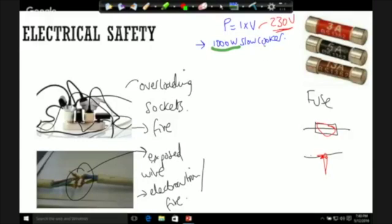So what we do if we're asked what fuse is best for a 1000 watt slow cooker, we would have to rearrange this equation. This is the one that you might be asked to do for foundation as well - rearranging this equation. You don't get asked to rearrange many, but this would be one. So P equals I times V, we'd need to rearrange it to work out the current and then we can use that to work out what fuse to use.